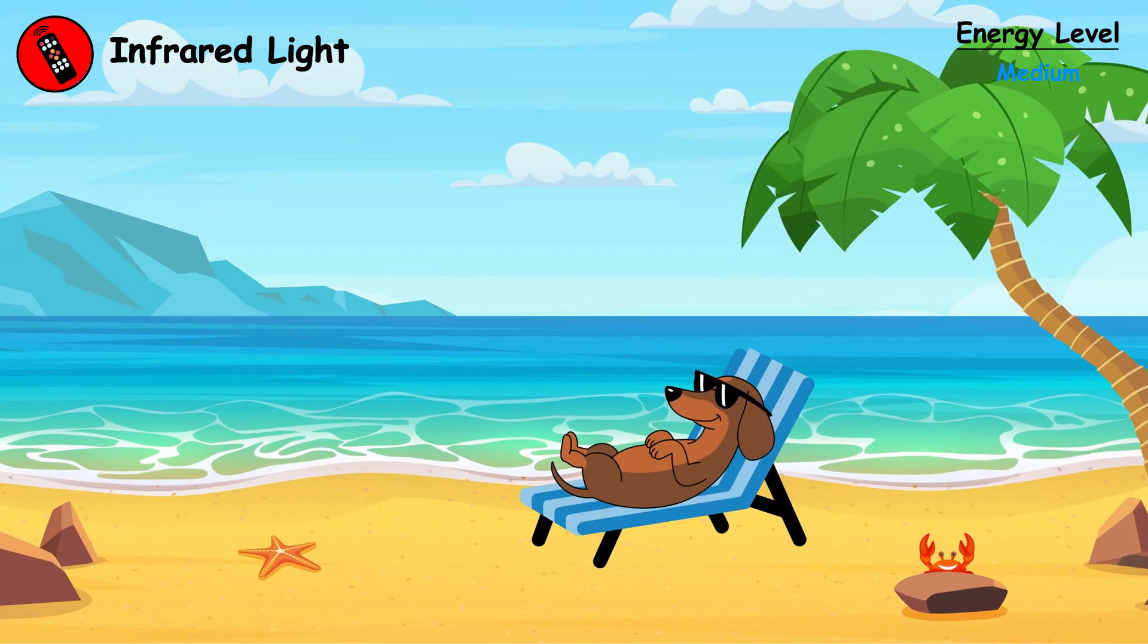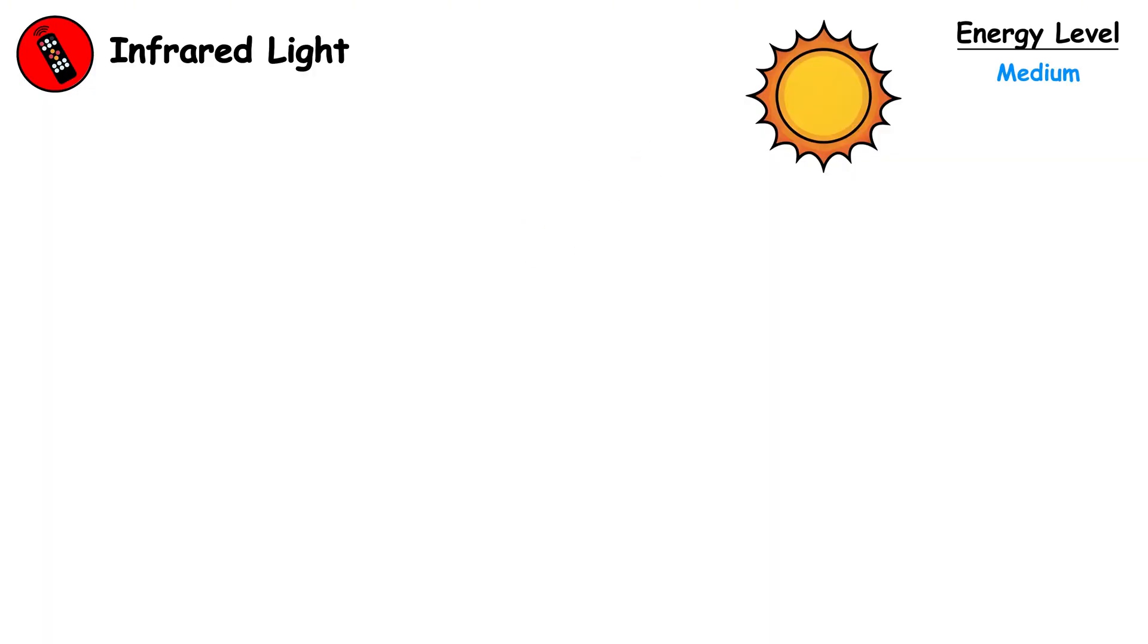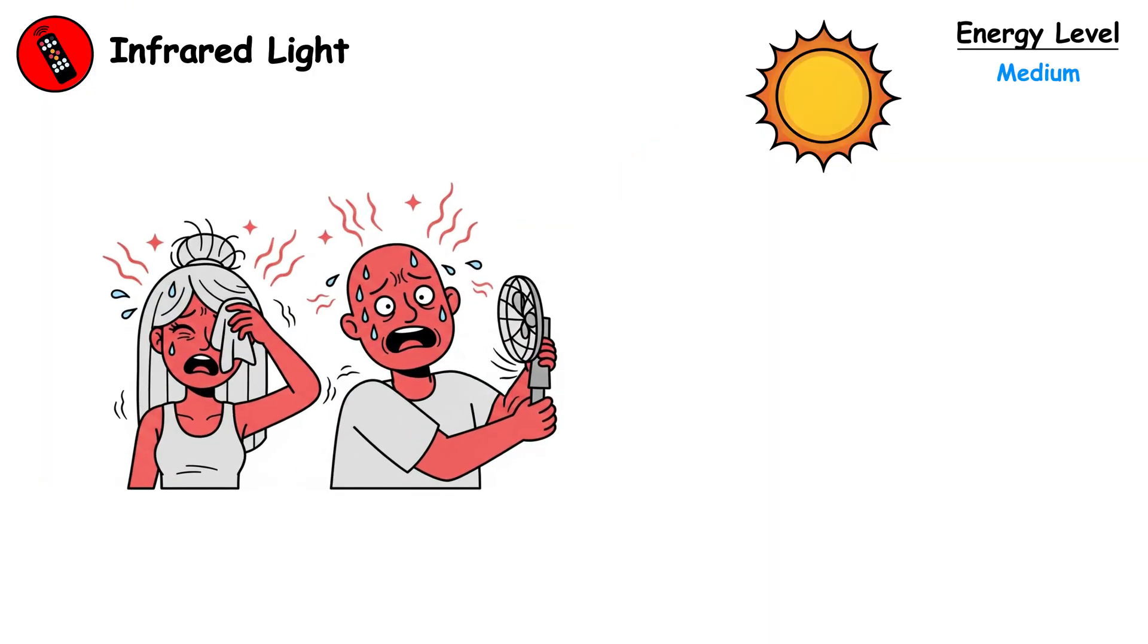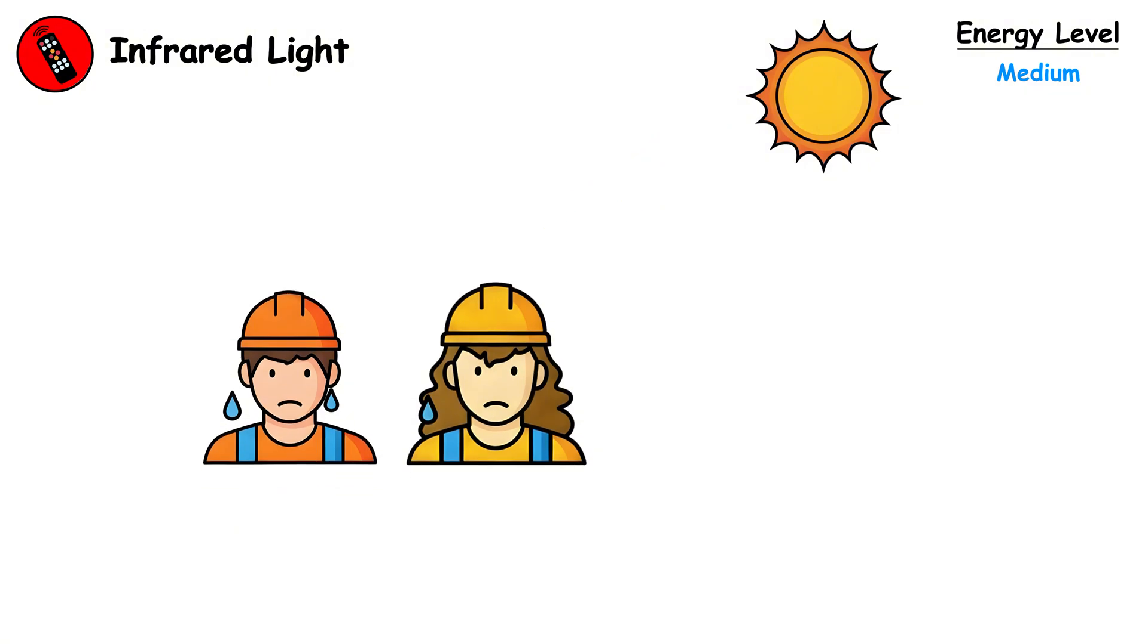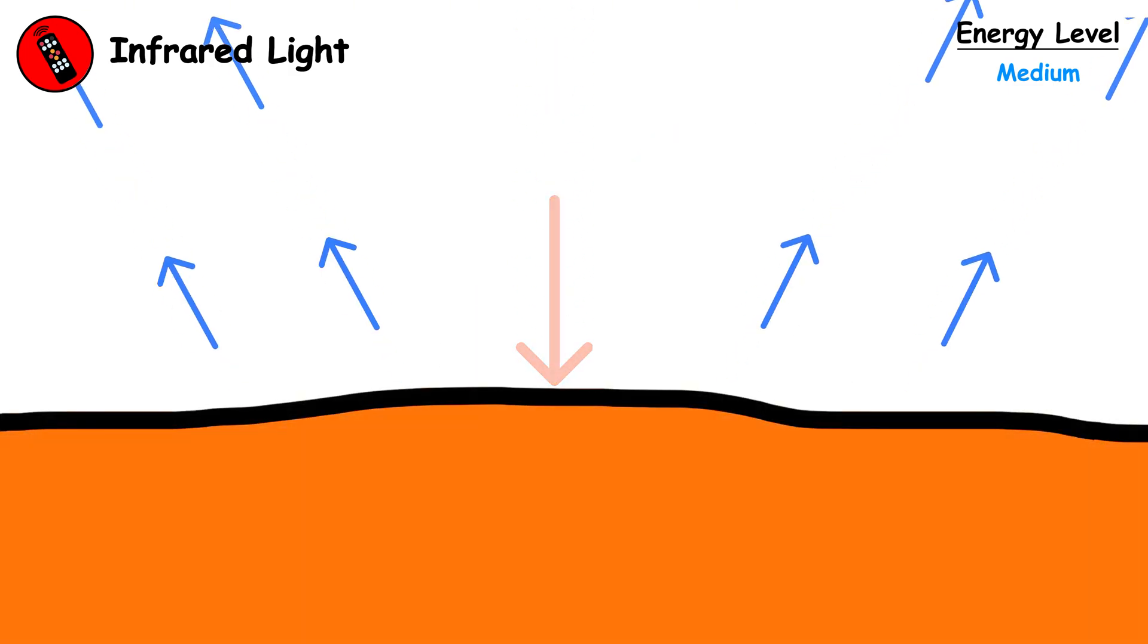Moderate exposure feels pleasant and can improve blood circulation. However, excessive exposure causes heat exhaustion and heat stroke. People working outdoors in direct sunlight for hours can suffer dangerous core temperature increases as their bodies absorb too much energy faster than they can dissipate it through sweating.